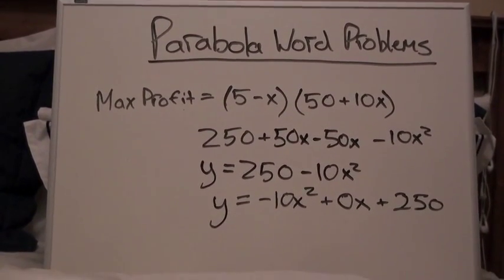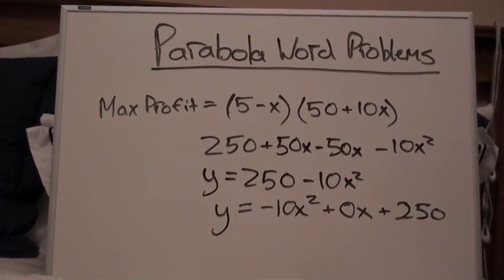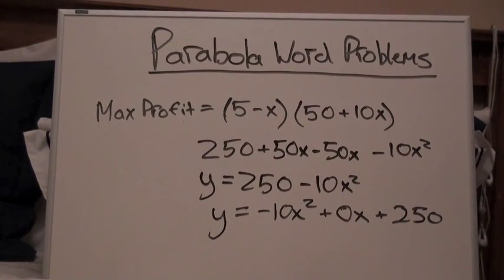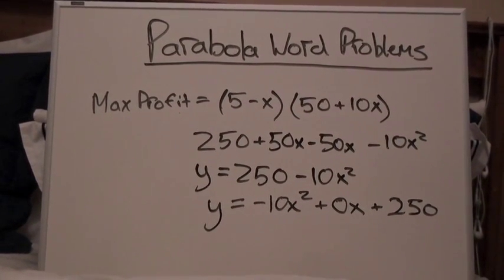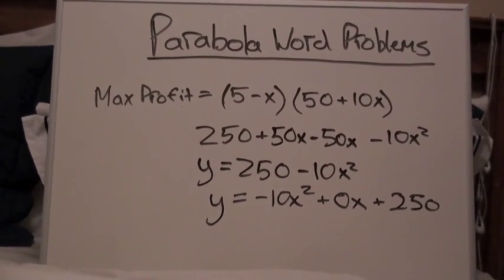We can see in the problem he originally sets his price at $5 and he originally has 50 customers. As we remember in the original problem, every dollar he reduces his price, Ethan will gain 10 customers.